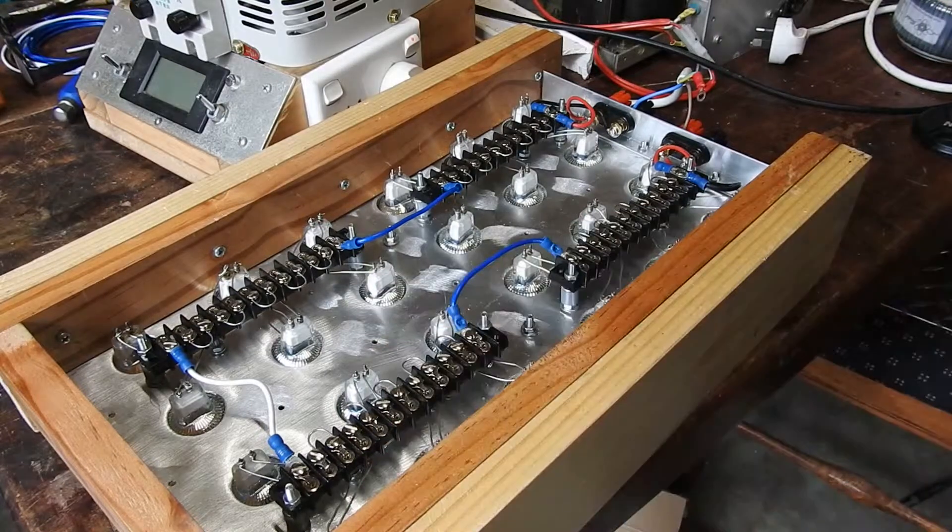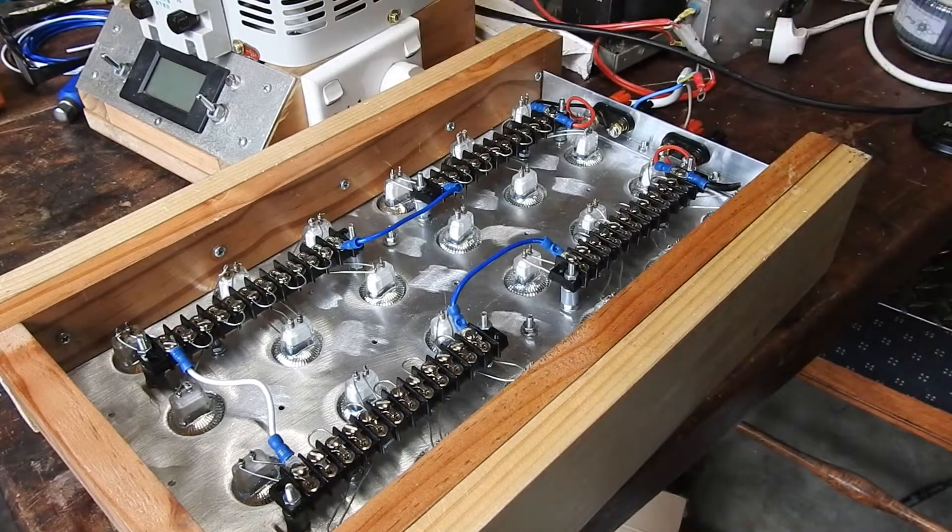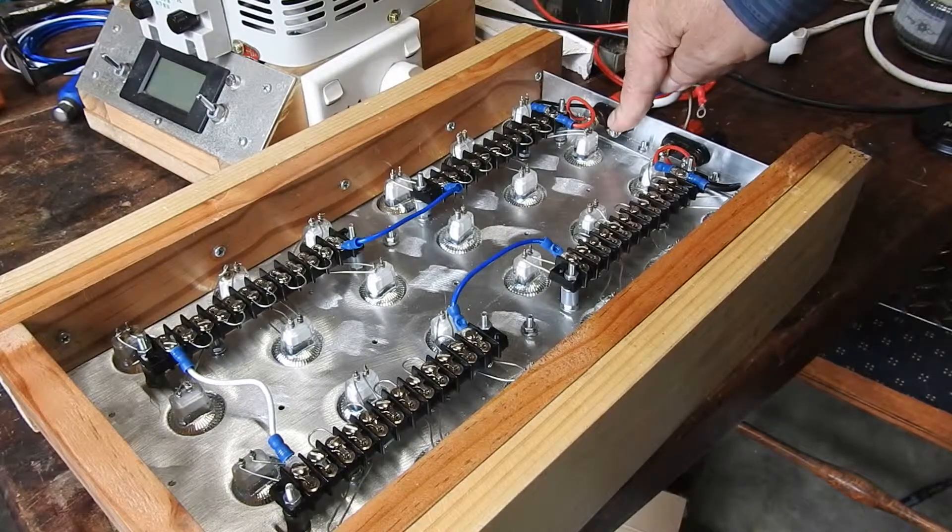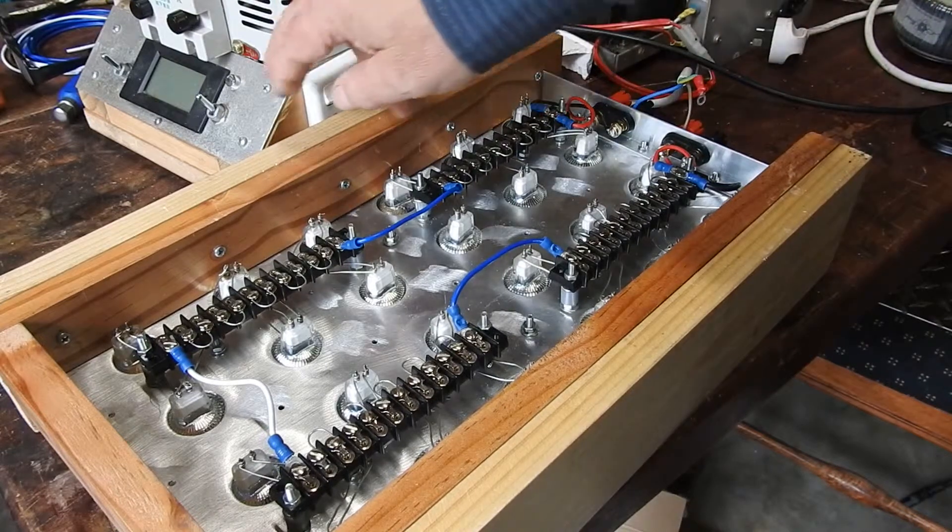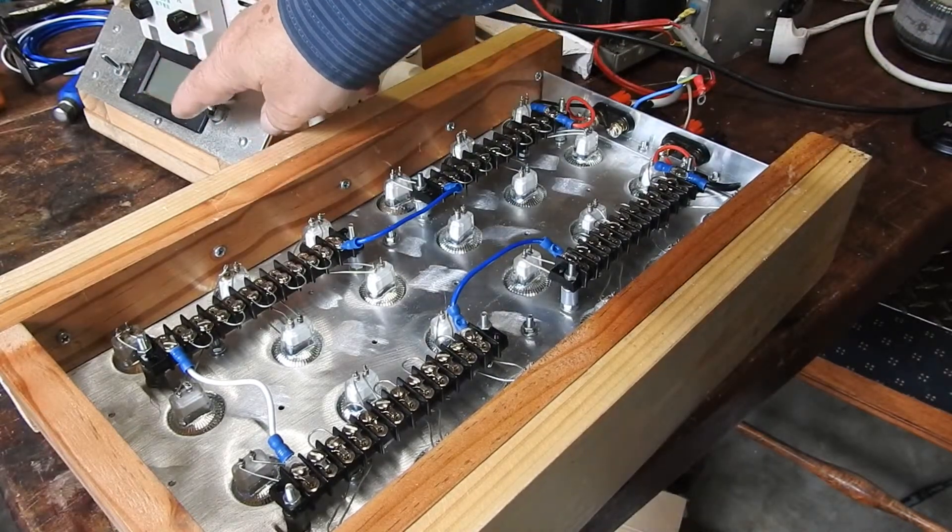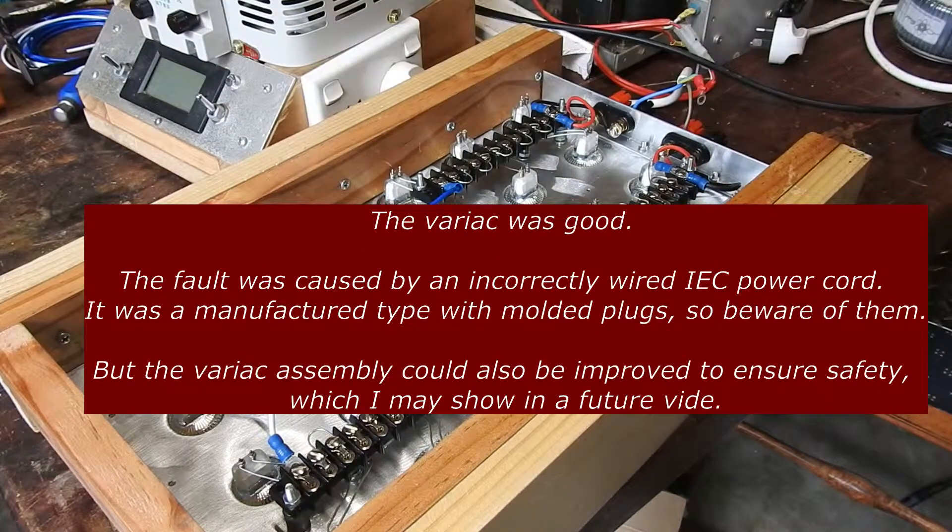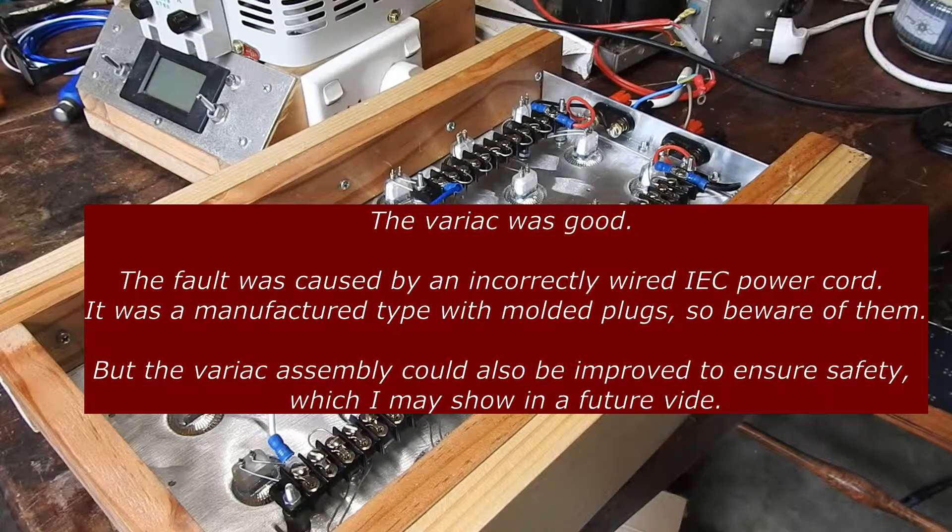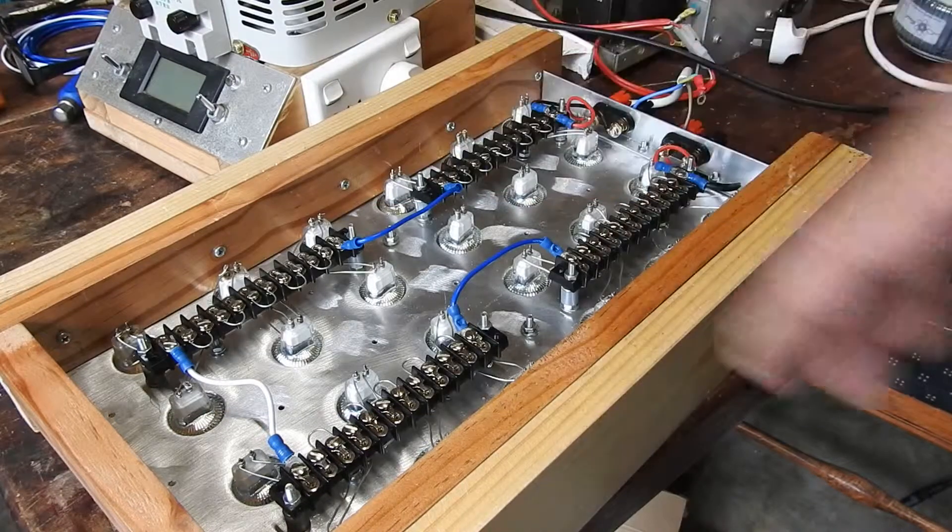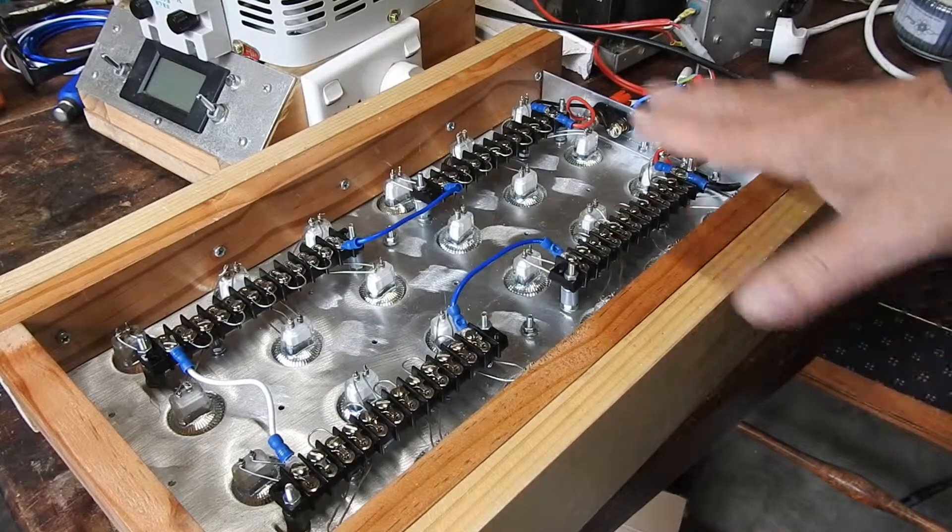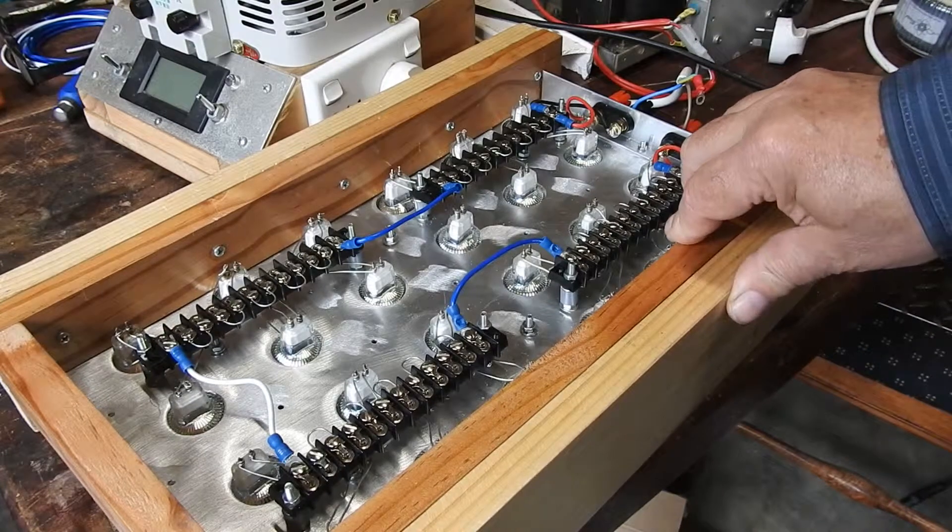In fact, even with that off, neutral is live, so there's some issue inside that variac and I'm pretty sure it's something to do with the way this power meter is wired up, so I've got to investigate that ASAP. But clearly for all those issues and the obvious one of the exposed wiring, a device like this should not be used for high voltages.